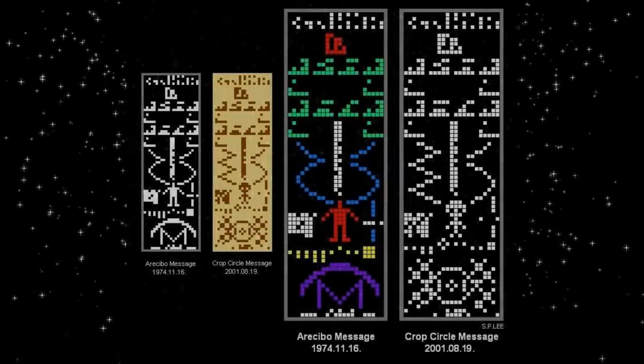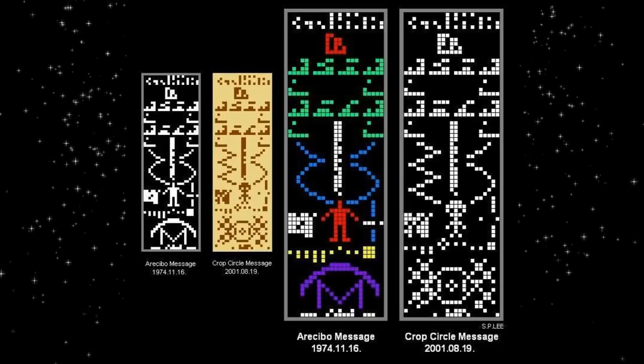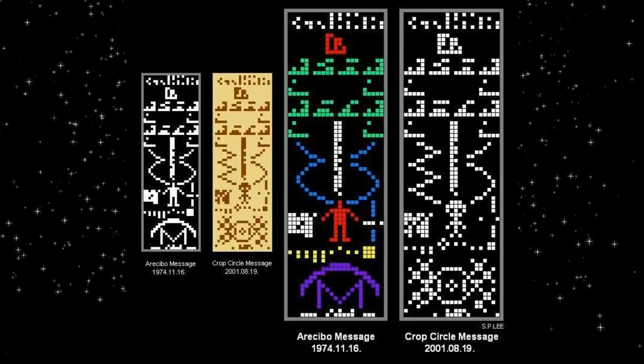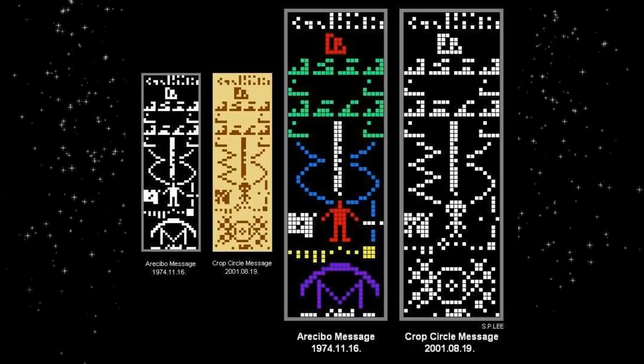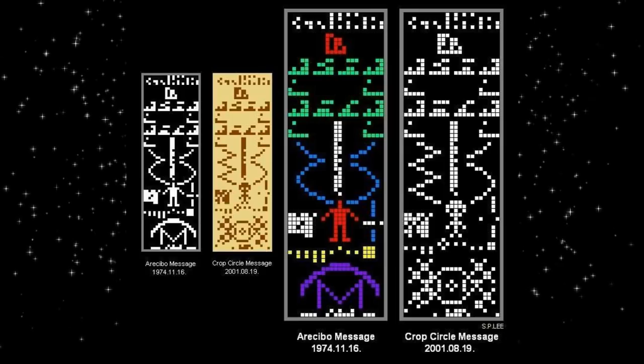Did you know the SETI Institute sent out a 1974 interstellar radio message with basic information about humanity and Earth? The Arecibo message was sent to globular star cluster M13 in the hope that extraterrestrial intelligence might receive and decipher it. The message consists of seven parts.